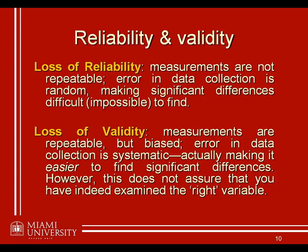Think about it this way: we might have an intelligence test that's very reliable, but if it's not valid — if it's not measuring intelligence but measuring something else — then we're going to run around making claims about intelligence when it's not really intelligence that we've measured. That makes a very serious violation when we have a loss of validity, even if we indeed have reliability.